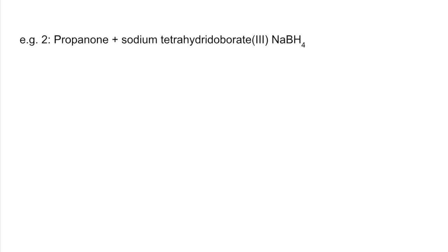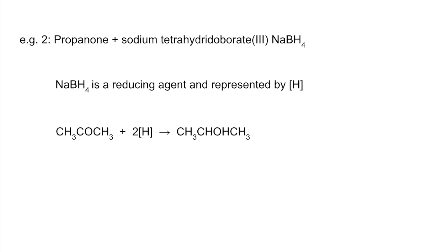Second example is very similar: propanone this time, not propanal, with NaBH4. The NaBH4 is a reducing agent represented by [H]. I'm going to use the oxygen sandwich again - two H's either side of the O. So we get CHOH, a secondary alcohol - propan-2-ol.